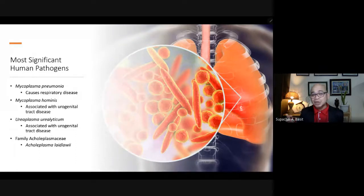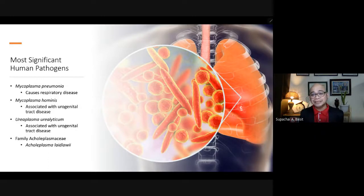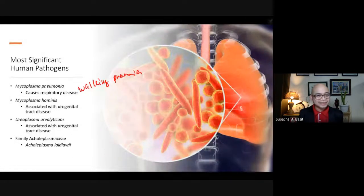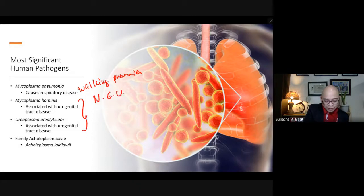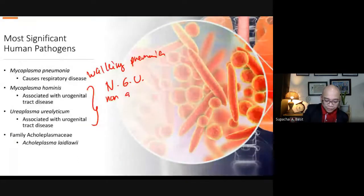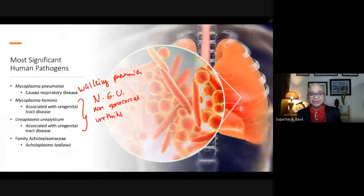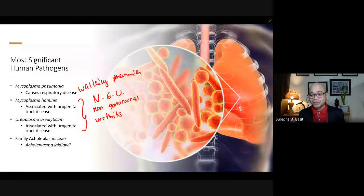The most significant human pathogens include Mycoplasma pneumoniae, which causes respiratory disease known as walking pneumonia. Mycoplasma hominis is associated with urogenital tract disease, as is Ureaplasma urealyticum. In fact, these two organisms cause the so-called NGU — non-gonococcal urethritis — meaning they possess signs and symptoms similar to gonorrhea, except that it is not caused by gonorrhea.